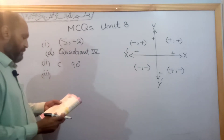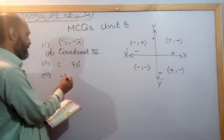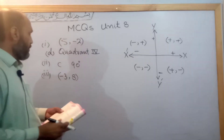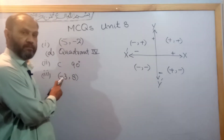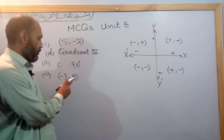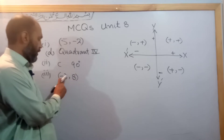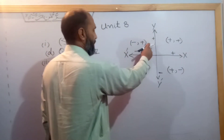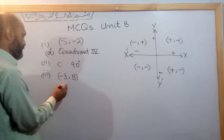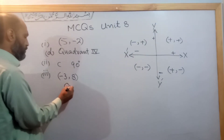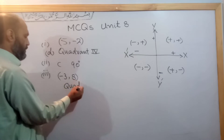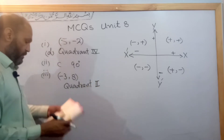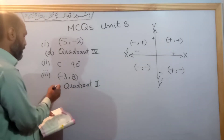The point (-3, 8) is located in which quadrant? The x-coordinate is negative and the y-coordinate is positive. Negative x and positive y corresponds to the second quadrant. The answer is quadrant 2, option B.